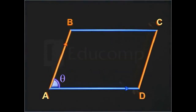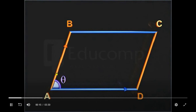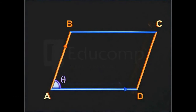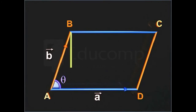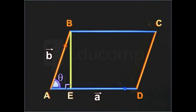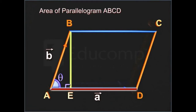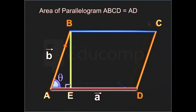Let ABCD be a parallelogram such that vector A and vector B represent its adjacent sides. If BE represents the height of the parallelogram, then its area is base into height, that is, AD into BE.